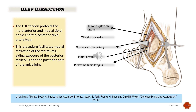The FHL tendon protects the more anterior and medial tibial nerve and the posterior tibial artery and vein. This procedure facilitates medial retraction of these structures, aiding exposure of the posterior malleolus and the posterior part of the ankle joint.